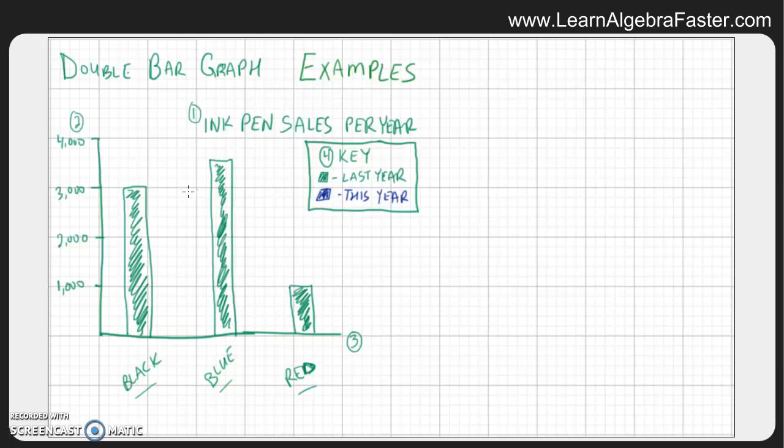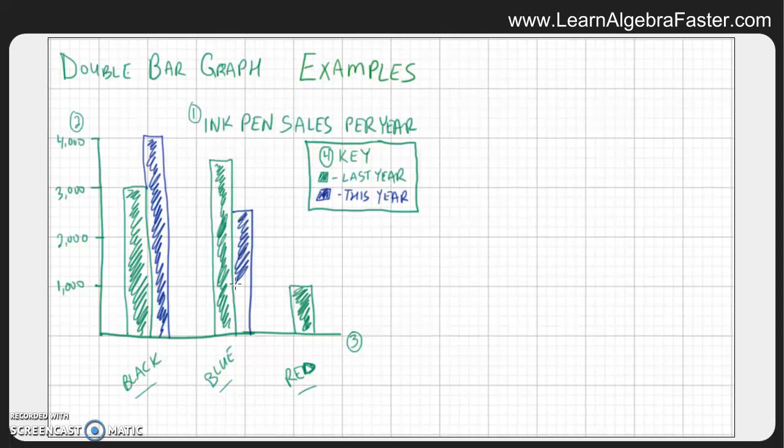So take a look. Let's say that the black ink pen sales actually went all the way up to 4,000 between last year and this year. The blue ink pen sales went down to 2,500 and so they actually lost sales. And then the red ink pen sales doubled from 1,000 to 2,000. So check that out.